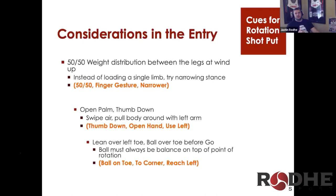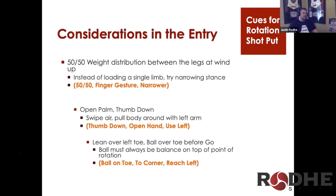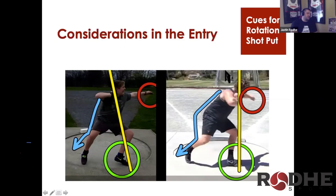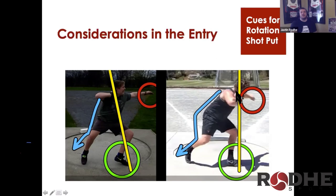Right before entry you want an open palm with thumb down. Here we see Ryan Krauser with his hand open and thumb down, using that arm to pull himself around and over the left foot, bringing a lot of energy into the point of rotation. Comparing this to a cupped hand with thumb up — there's no force there, nothing pulling the body in. We need to clear the side, and the open palm thumb down position facilitates that.